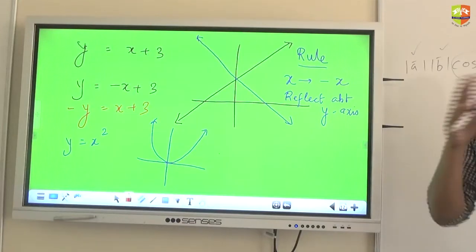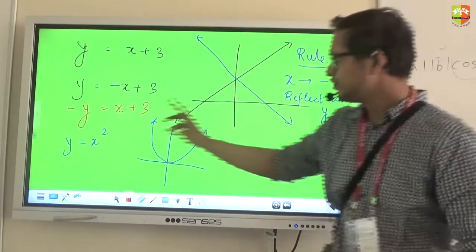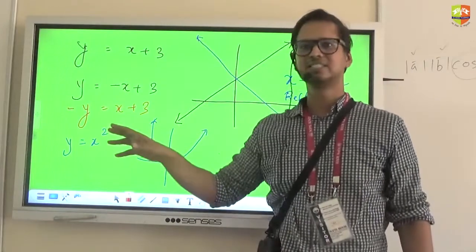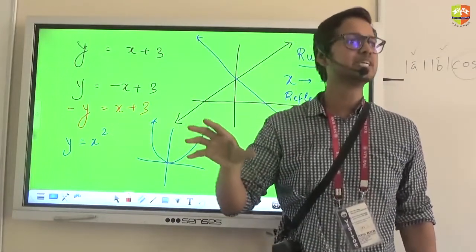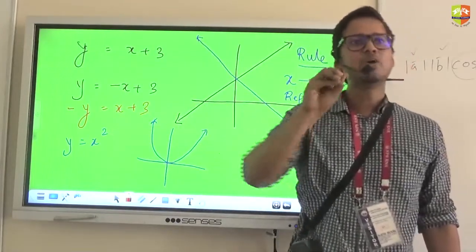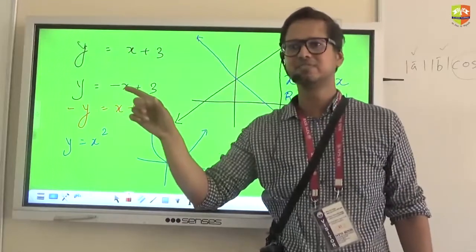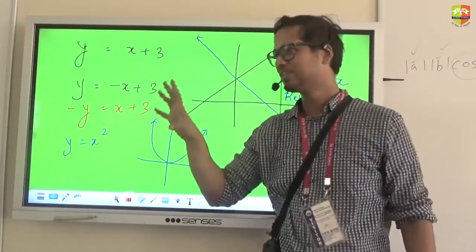Now this is common sense but logically also you can derive this by saying that, if you are changing the sign of X, that means what you are doing, for the same Y, now my X is negative of itself. Correct?